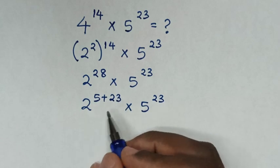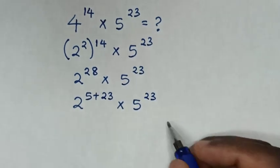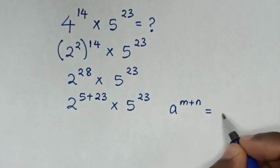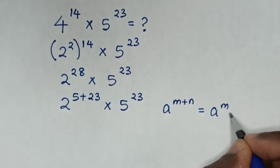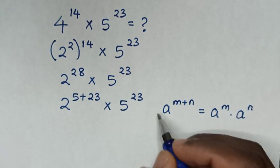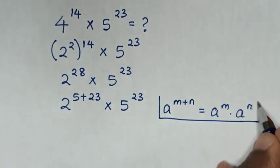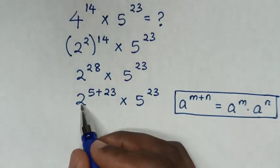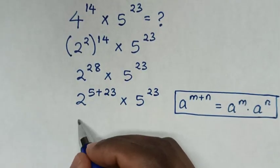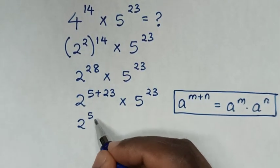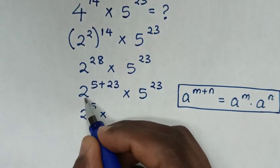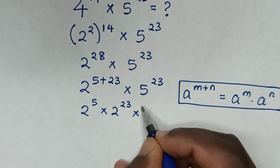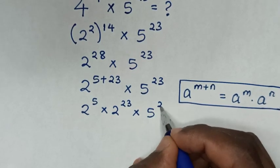The next step: from this exponent with the addition of powers, we'll apply the exponential rule that a to the power of m plus n equals a to the power of m, times a to the power of n. So it will be 2 to the power of 5, then times 2 to the power of 23, times 5 to the power of 23.